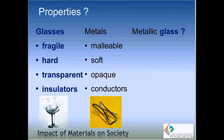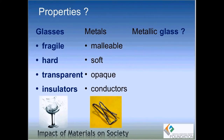The intriguing question is: if we take a metallic element like copper, nickel, or aluminum, and change its atomic arrangement from crystalline to amorphous like glass, how do the properties change? That's the third column on this slide, which I have intentionally left blank. We want to fill that column using our knowledge of glasses and metals — how will the properties of a metallic glass behave, with metallic elements but an atomic arrangement more like glass?